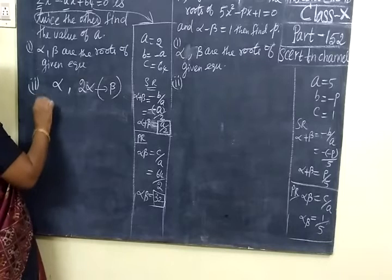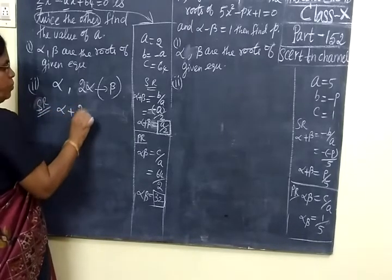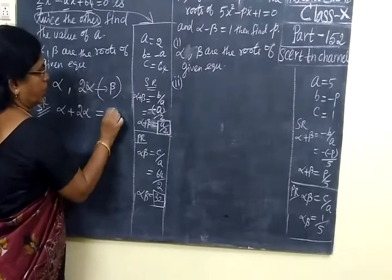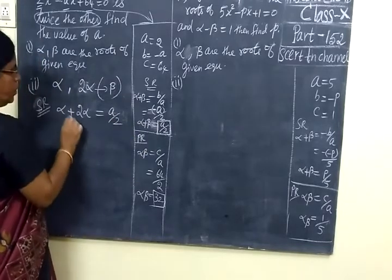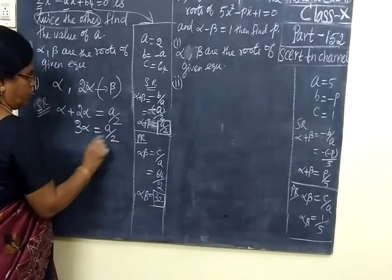So usually what we are finding? Sum of the root. Sum of root is now alpha plus 2 alpha. Sum of root is minus b by a. Sum of root is given as a by 2. Alpha plus 2 alpha, that is 3 alpha equal to a by 2.